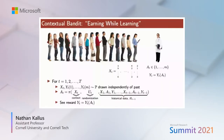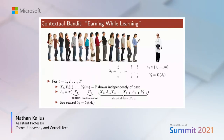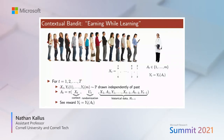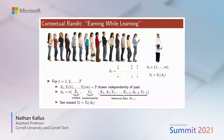Contextual bandits are a model for decision-making in unknown environments where we're learning about the environment at the same time that we're making decisions and collecting rewards. For every time step t equals 1, 2, up to capital T, we encounter an individual drawn from a stationary distribution, characterized by baseline covariates xt and potential outcomes corresponding to each of M action options available to us.